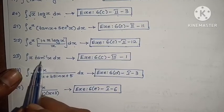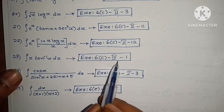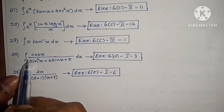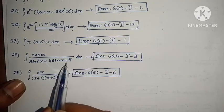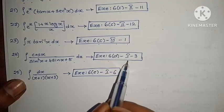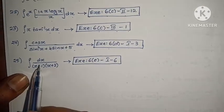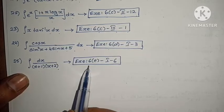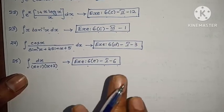Next: integral of x · tan⁻¹x dx, exercise 6b, Roman numeral 3, 1st problem. Next: integral of cos x/(sin²x + 4 sin x + 5) dx, exercise 6b, Roman numeral 1, 3rd. Next: integral of dx/((x+1)(x+2)), exercise 6b, Roman numeral 1, 6th problem.